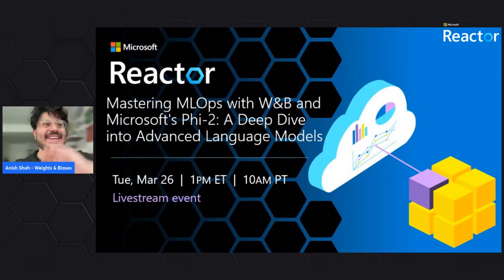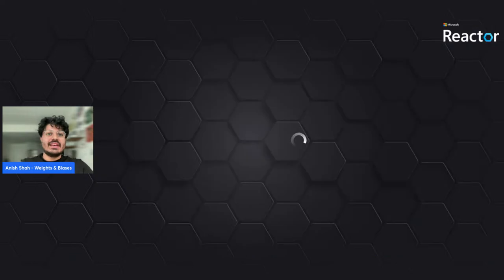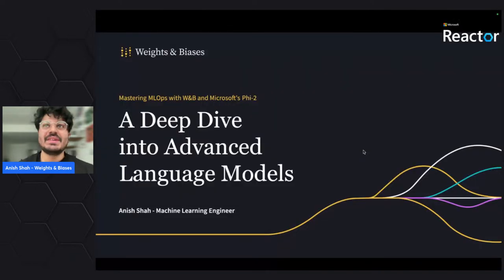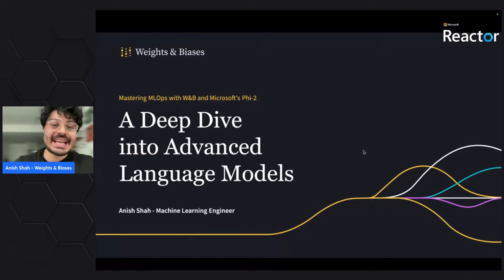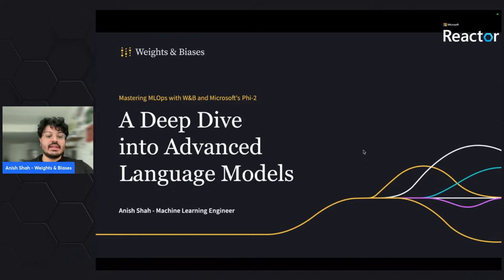Hey everyone, I'm glad to be here. My name is Anish Shah. I work at Weights and Biases, the AI developer platform for all of your deep learning and machine learning needs. I'm really excited to teach you all how to master MLOps with Weights and Biases and Microsoft's Phi-2 small language model. Today we're going to jump into advancements within the large language model space and talk about how small language models like Phi-2 can help elevate your business needs.